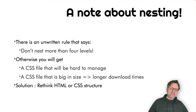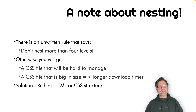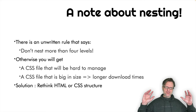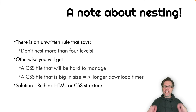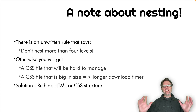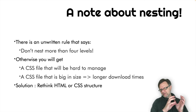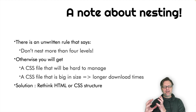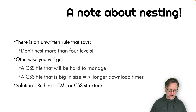It might be tempting to write HTML-like nesting and write all the elements, but you will get a fairly complex and very large CSS file. The rule of thumb says never nest more than four levels — usually try to keep it to two or maybe three. Otherwise you will get really huge CSS output, because when it transcodes into a CSS file, you will have all these nested rules after each other, creating super complex selectors.